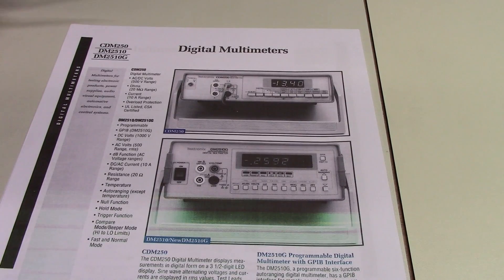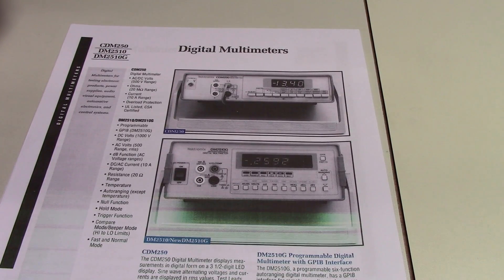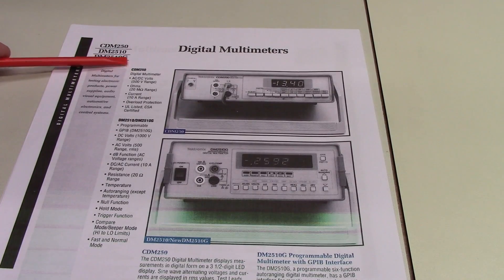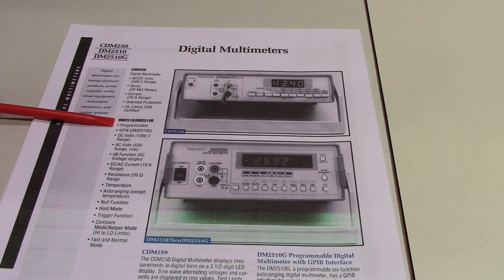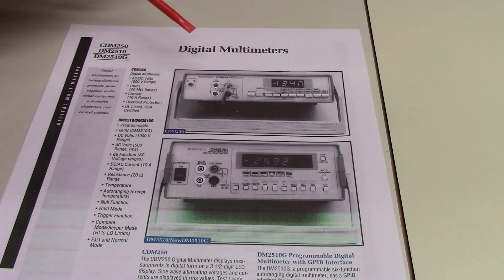I'll link the source of this document down below in the video. This is what appears to be from a Tektronix catalog. There's no date given, but I'm pretty sure it's before 1995. In fact, this section of the catalog talks about both the CDM250, which is another multimeter that I have on my bench, as well as the DM2510 series. I know that this is a 1980s vintage meter, so I suspect that this one is contemporary.